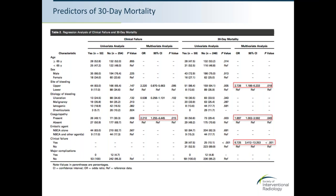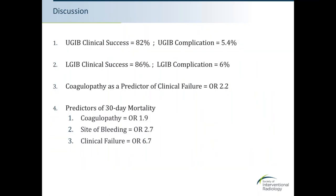To summarize the main findings: in technically successful cases, pooled clinical success in upper GI bleeding was 82% with a 5% major complication rate, and in lower GI bleeding, 86% success with a 6% complication rate. Coagulopathy was an independent predictor of clinical failure with an odds ratio of 2.2. Three endpoints predicted 30-day mortality: coagulopathy, site of bleeding, and clinical failure. Strengths include the comprehensive statistical methods and thorough literature review.